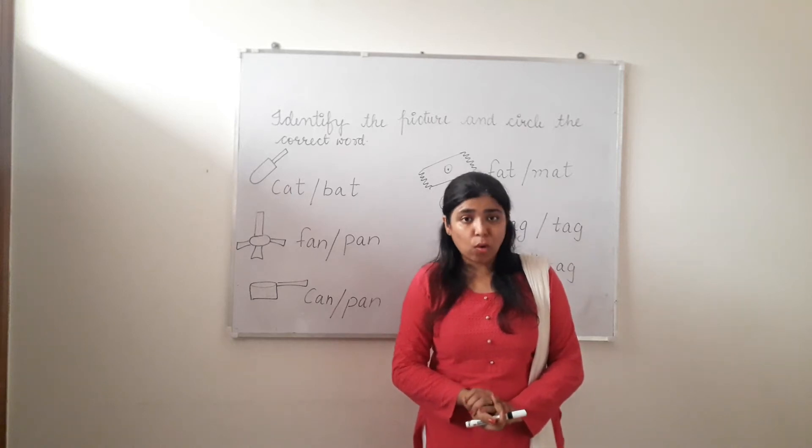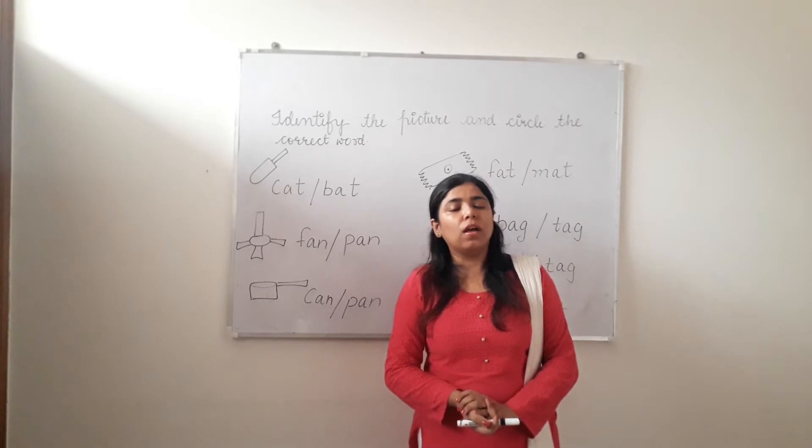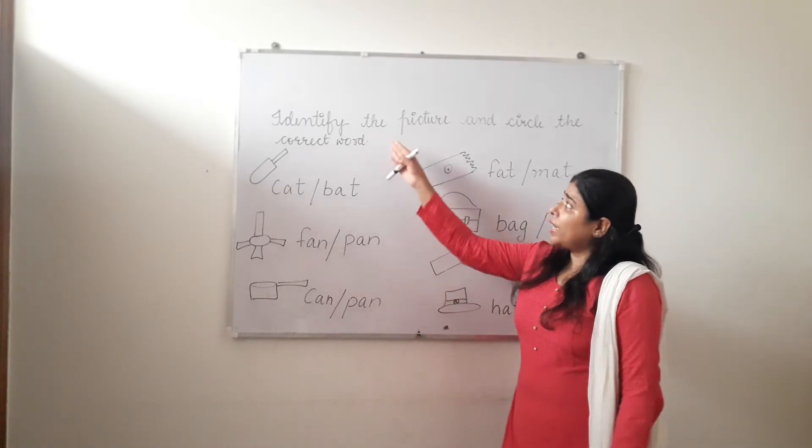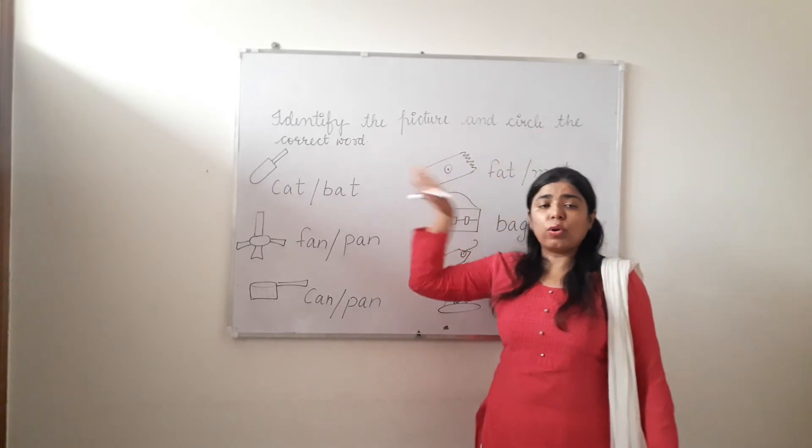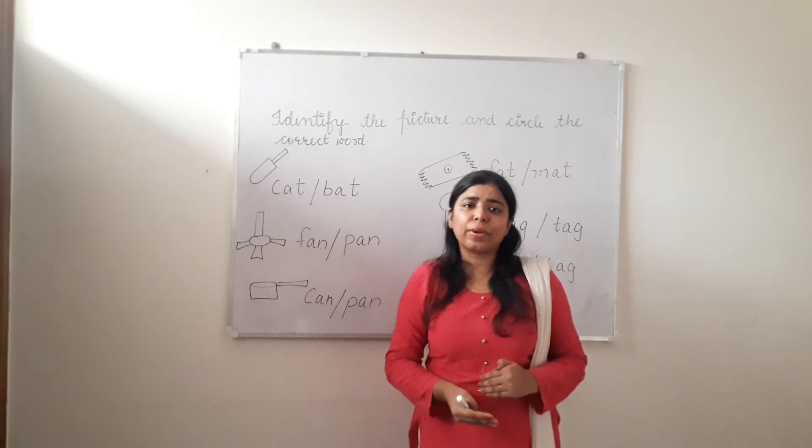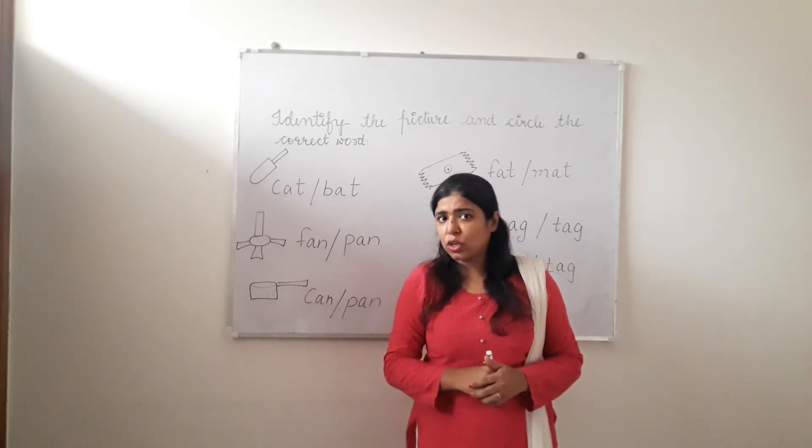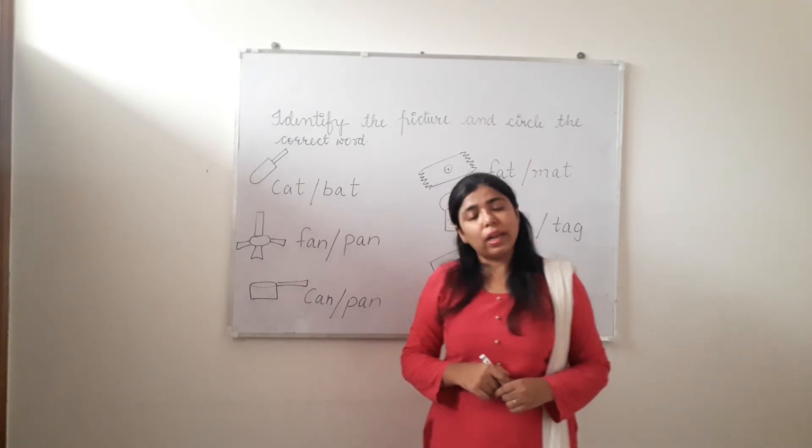Hey friends, how are you all? I hope you all will be fine at home and you will be studying at home. So in this video we are going to learn identify the picture and circle the correct word. What you have to do in this? First you have to identify the picture and then you will circle it. You will identify the picture and then you will circle it. So let's start.